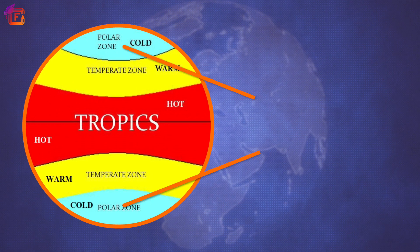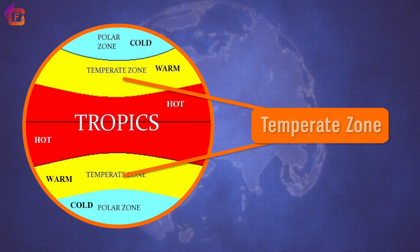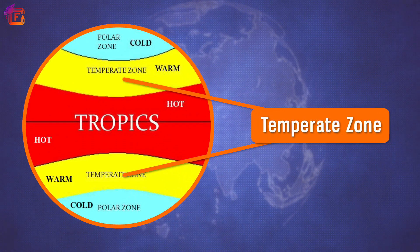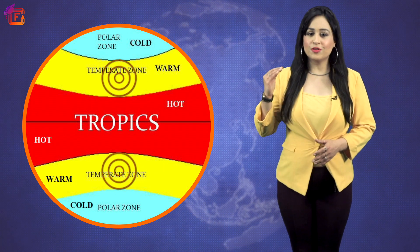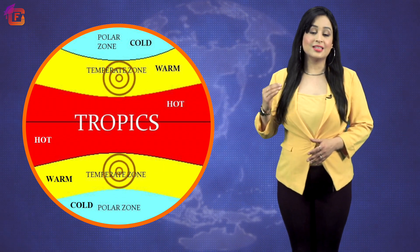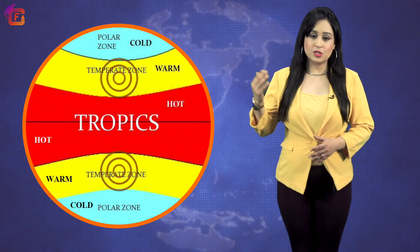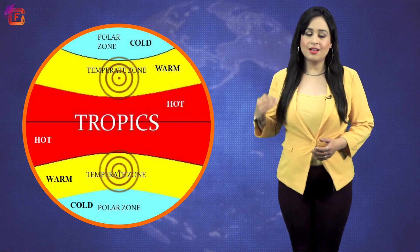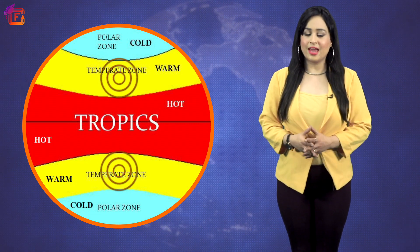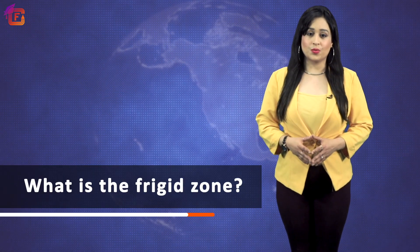Hello learners, welcome to the video. In the previous chapter we learned about the frigid zone. The temperate zone is a zone of moderate heat. It lies between the Tropic of Cancer and the Arctic Circle in the northern hemisphere, and the Tropic of Capricorn and the Antarctic Circle in the southern hemisphere. Now, what is the frigid zone?